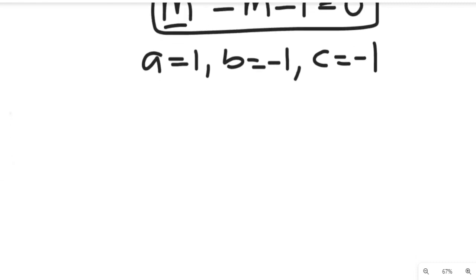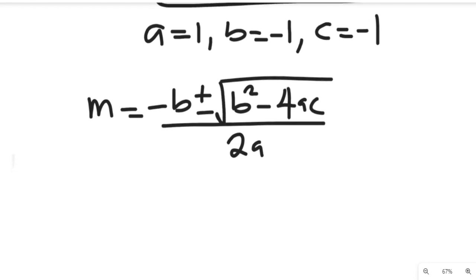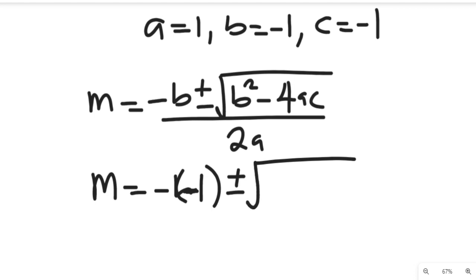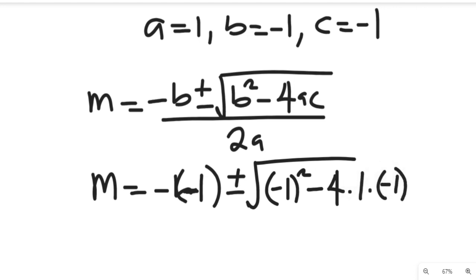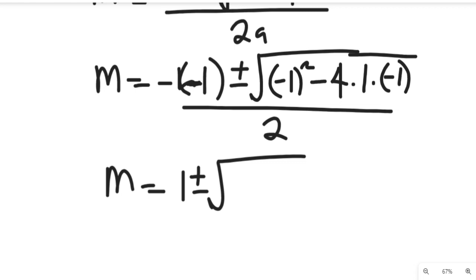From the quadratic formula, m equals negative b plus or minus the square root of b squared minus 4ac, divided by 2a. Substituting our values: m equals 1 plus or minus the square root of negative 1 squared minus 4 times 1 times negative 1, divided by 2.